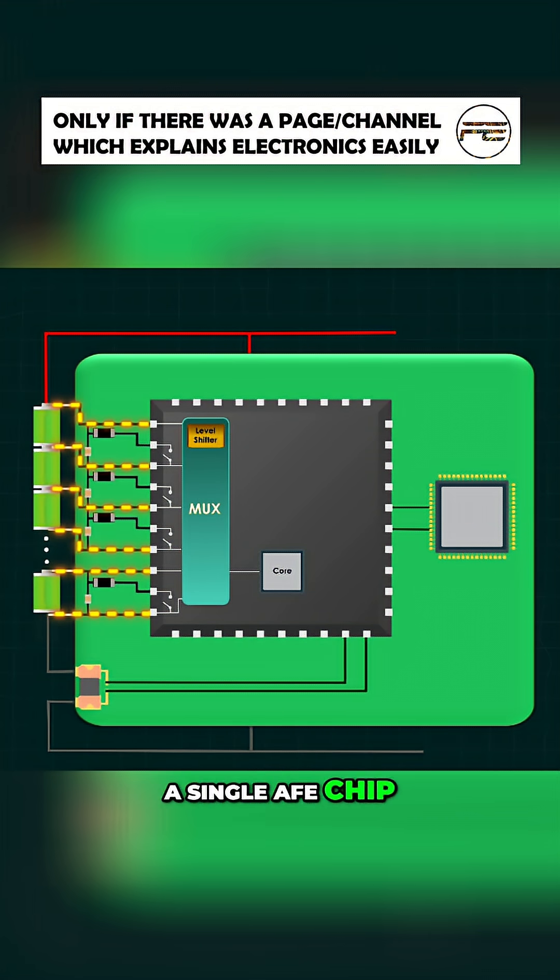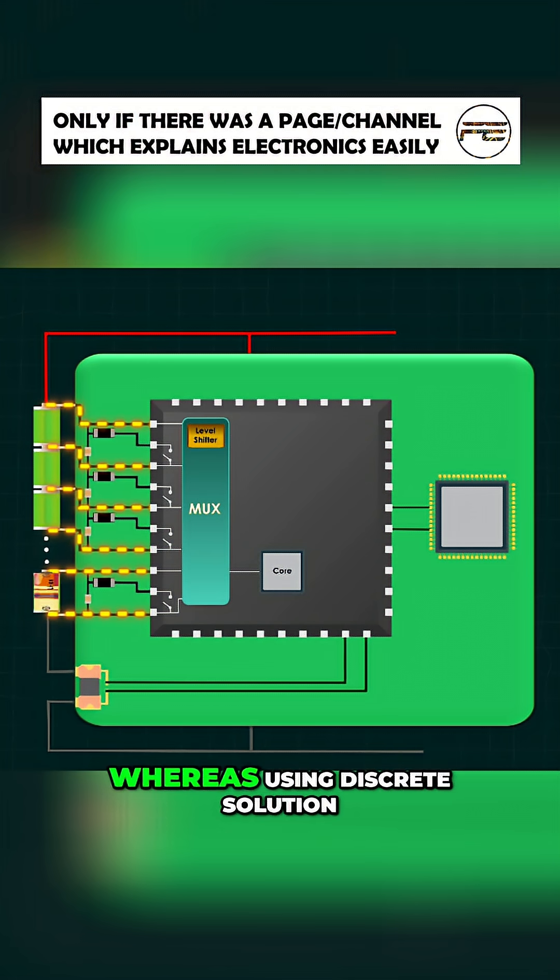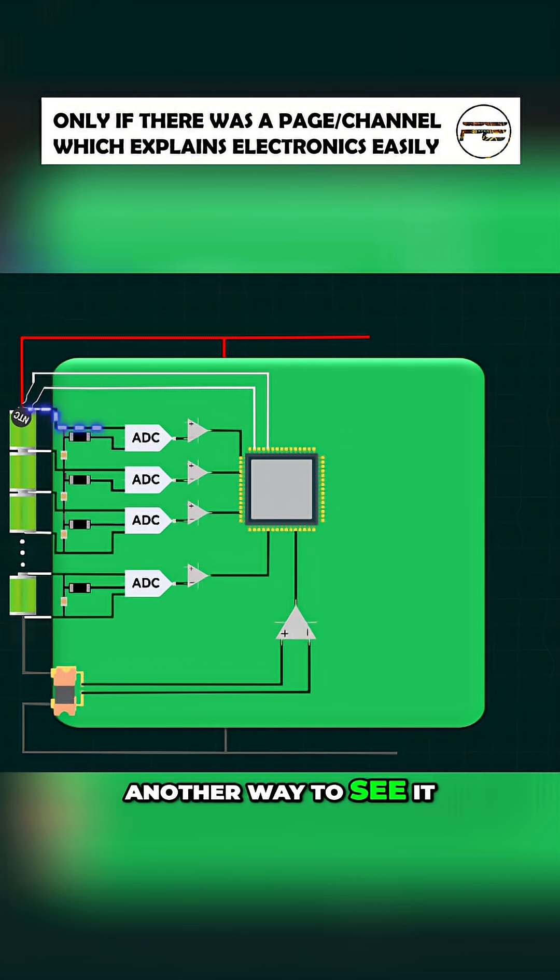A single AFE chip can often be configured for a different number of cells or chemistry, whereas using a discrete solution might need redesigning for each case.